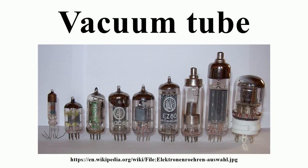A vacuum tube consists of two or more electrodes in a vacuum inside an airtight enclosure. Most tubes have glass envelopes, though ceramic and metal envelopes have been used. The electrodes are attached to leads which pass through the envelope via an airtight seal. On most tubes, the leads in the form of pins plug into a tube socket for easy replacement. Some tubes had an electrode terminating at a top cap, principally to avoid leakage resistance through the tube base, particularly for the high-impedance grid input, as phenolic insulation performs poorly in humid conditions. Other reasons include reduced grid-to-anode capacitance, improved high-frequency performance, keeping a very high plate voltage away from lower voltages, and accommodating one more electrode than allowed by the base.